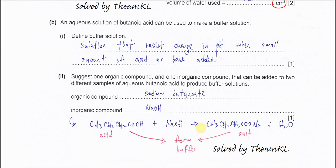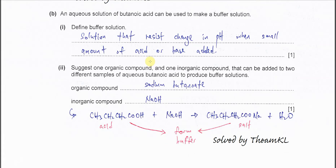Part B. An aqueous solution of butanoic acid can be used to make a buffer solution. Part one: define buffer. A buffer is a solution that resists change in pH when a small amount of acid or base is added. The key phrase is 'resists change in pH when a small amount of acid or base is added.'